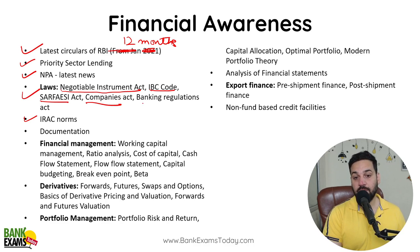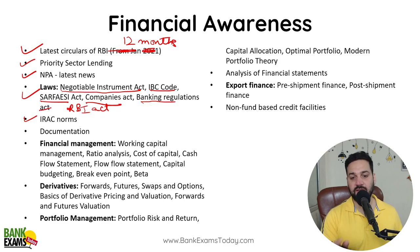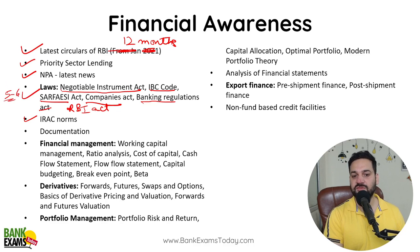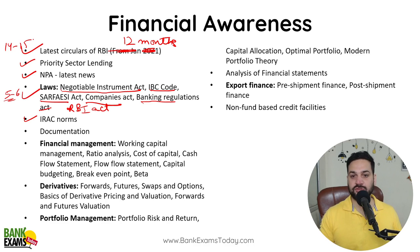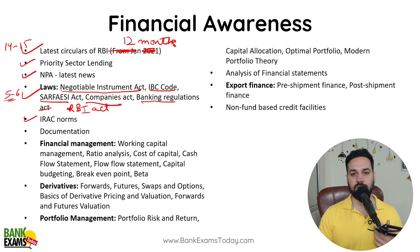Companies Act is very lengthy but fewer questions come from it. Banking Regulation Act also appears occasionally. RBI Act gives 1–2 questions sometimes. IRAC norms is very important. You can expect about 5–6 questions from laws directly, and 14–15 to 20 questions from RBI circulars — for example, Priority Sector Lending questions and IRAC norms questions are all RBI circular questions.